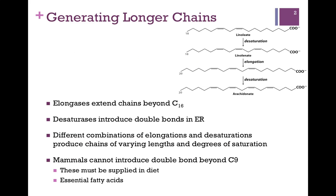There are also enzymes called desaturases, and these enzymes introduce double bonds. This usually occurs in the endoplasmic reticulum. We can use different combinations of these elongases and desaturases, and that gives us fatty acid chains of varying lengths and degrees of saturation. Mammals cannot introduce double bonds beyond carbon number 9, and so these are the essential fatty acids that must be supplied in the diet.